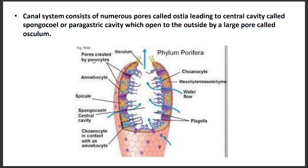As you can see here, pores through which water enters are visible, along with spicules, spongocoel cavity, and small structures called choanocytes. The water flow — how water enters and exits — is shown here.